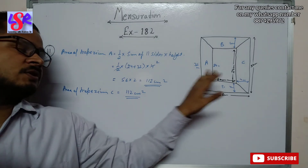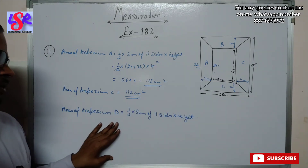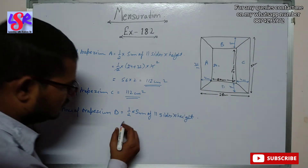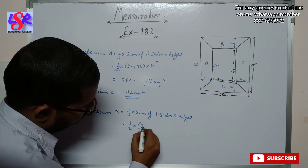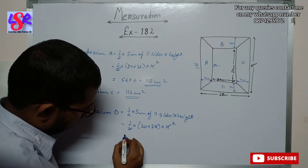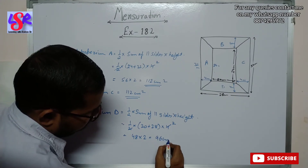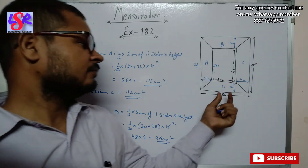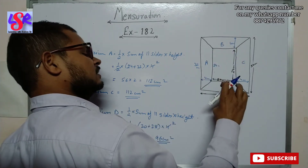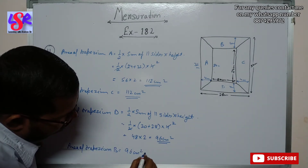The height of the side trapeziums is (32 − 24) ÷ 2 = 4 centimeters each. Area of trapezium D = (1/2) × (20 + 28) × 4 = (1/2) × 48 × 4 = 96 cm². Area of trapezium B also has the same dimensions as D, so area of trapezium B = 96 centimeters square as the answer.